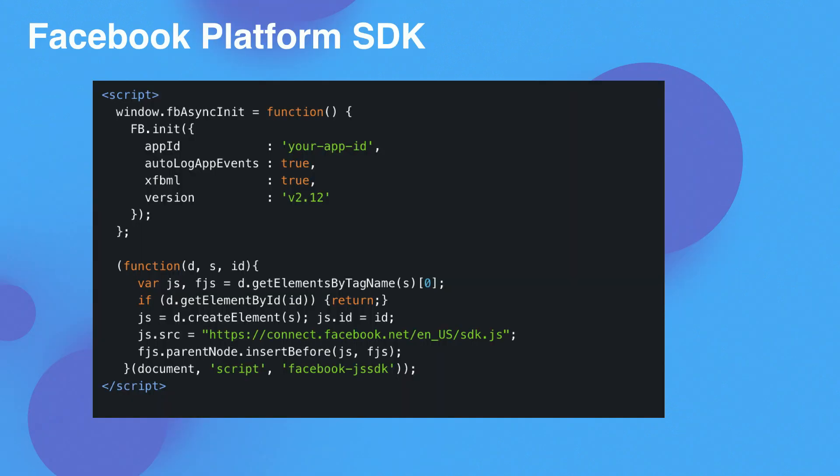At a high level, each plugin is basically some simple HTML code that you can put on your website. The very first step to building those plugins is to include the Facebook Platform SDK on your website, which is just a few lines of JavaScript code shown in the example in the slides. This is the same SDK that you use for other Facebook developer products, such as Facebook Login and the Facebook Like button. If you're already using those plugins, you don't need to do anything here.